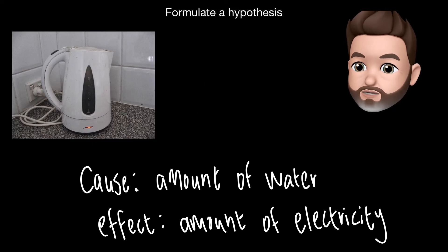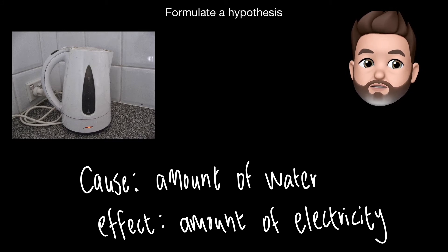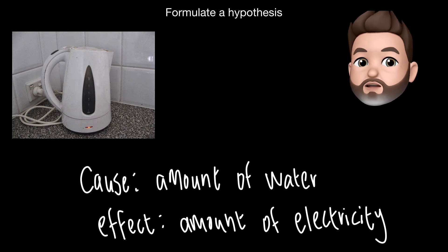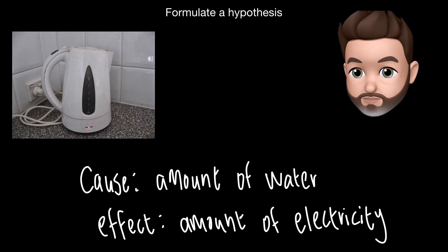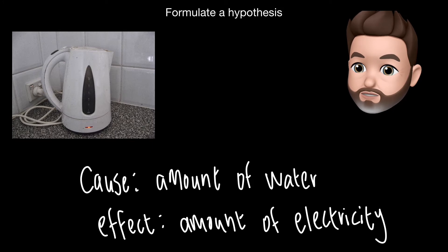So what's really important to notice is that a hypothesis is a statement about cause and effect. In this case, the cause is the amount of water being boiled, and the effect is the amount of electricity that's being used to boil this water. You can't have a hypothesis, or it won't be a hypothesis, unless it's a statement including these two aspects, cause and effect.